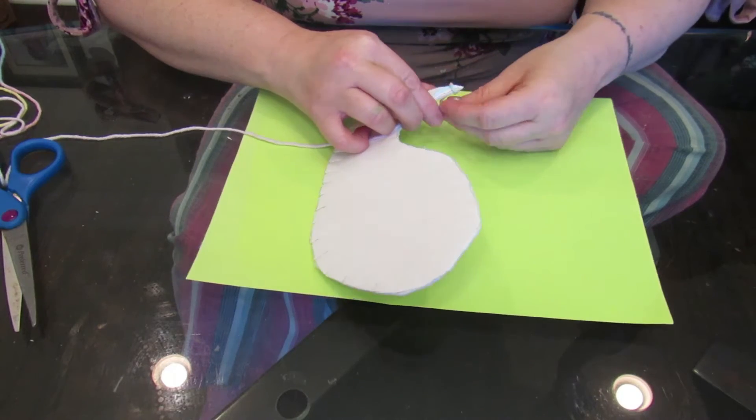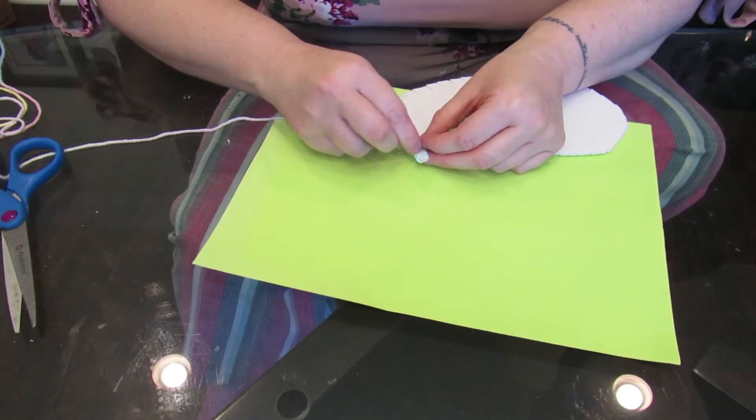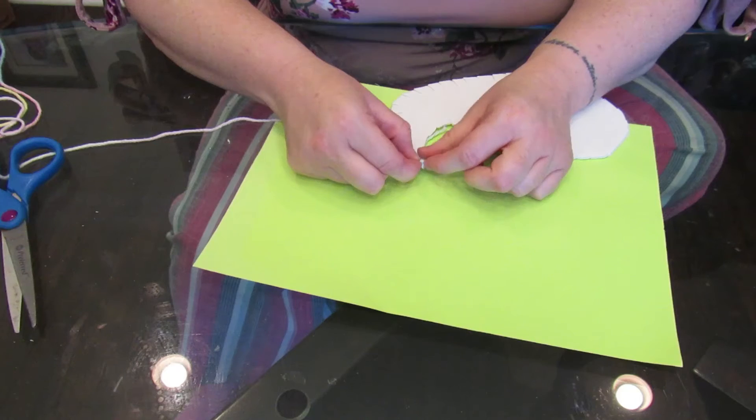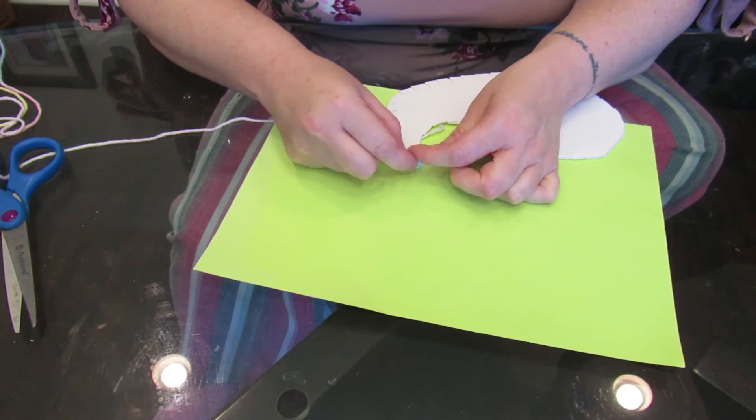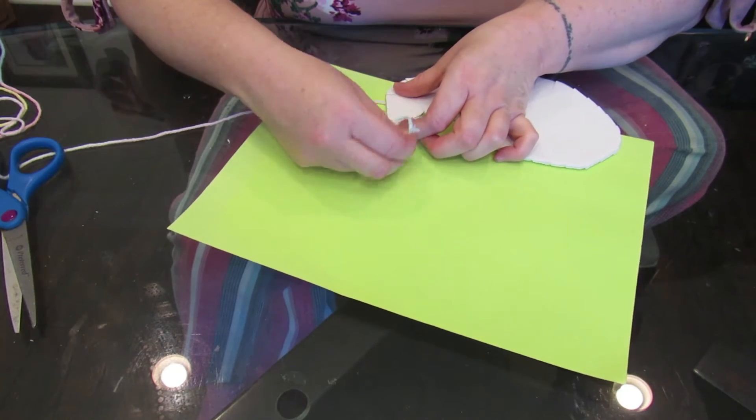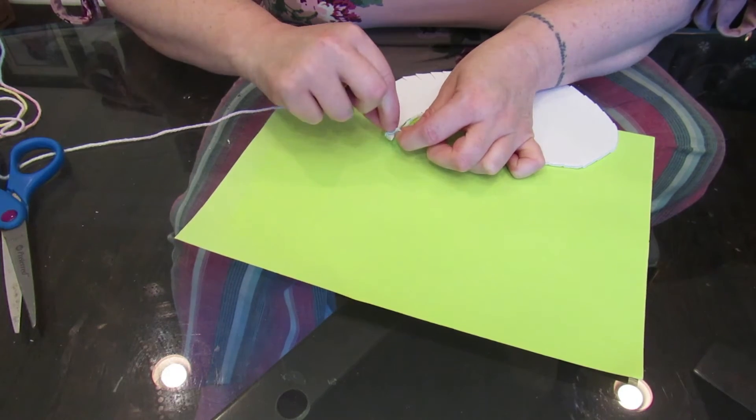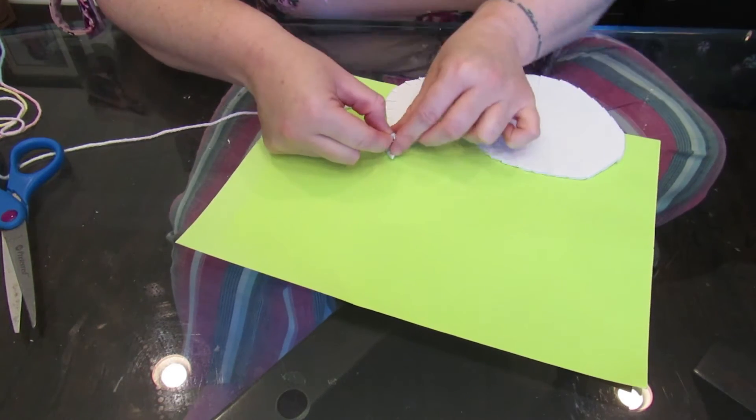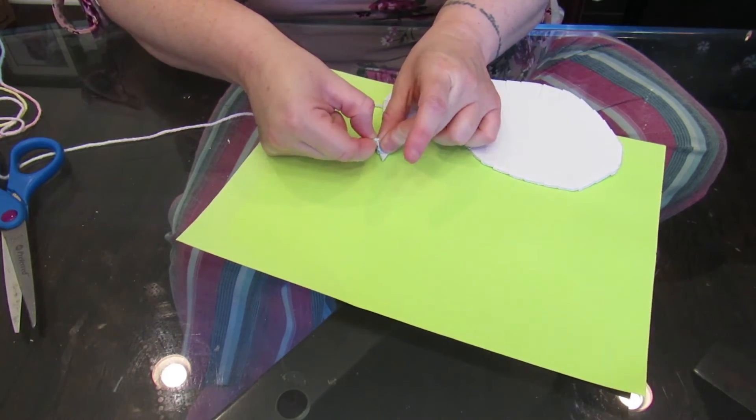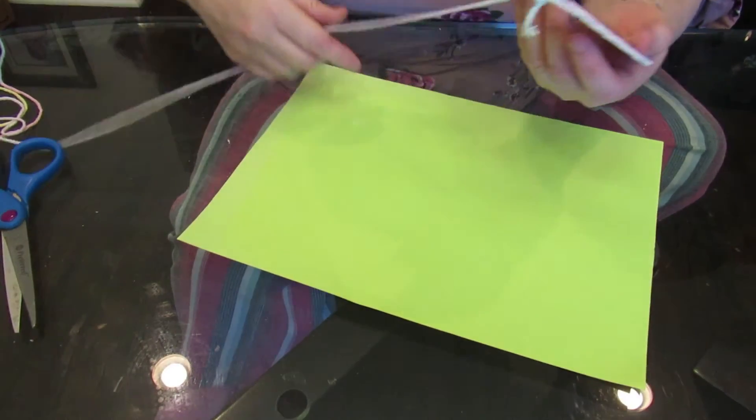What you can do is for this end piece you know wrap it around and tie it. There you go. All right so now you have like an anchor right?